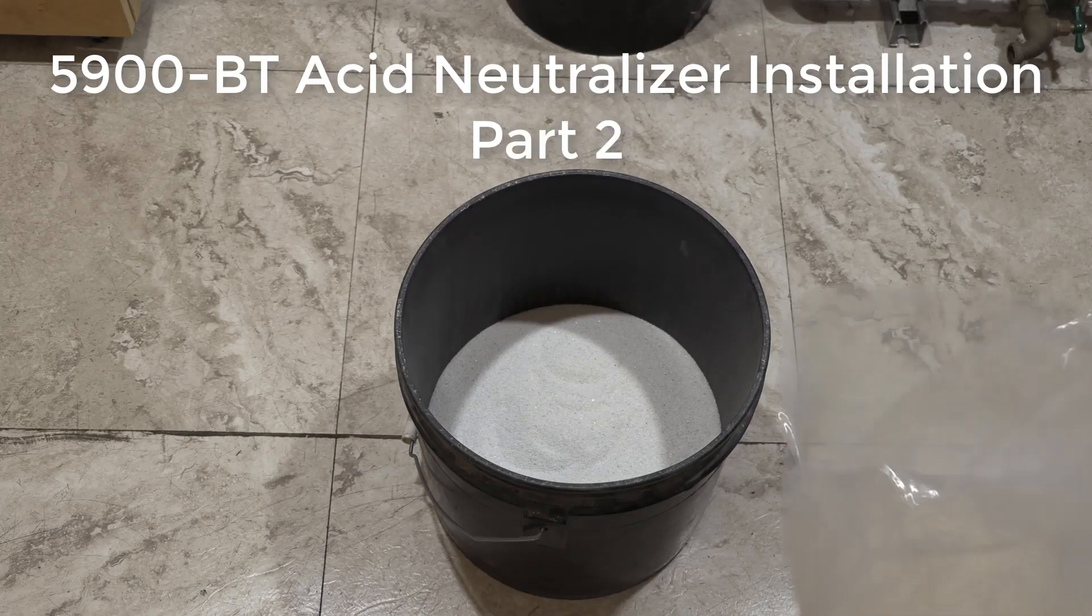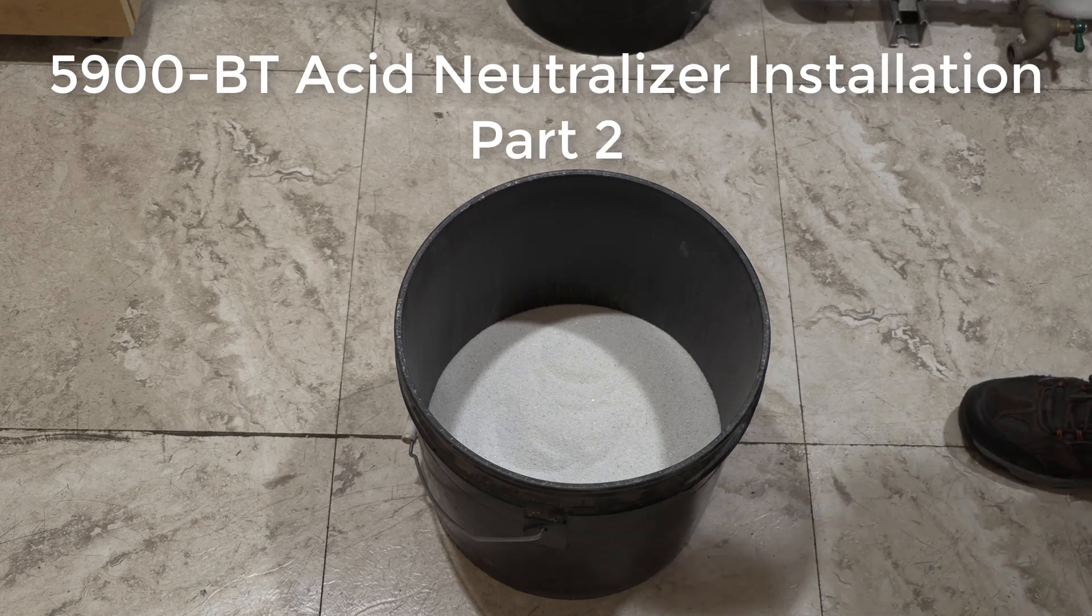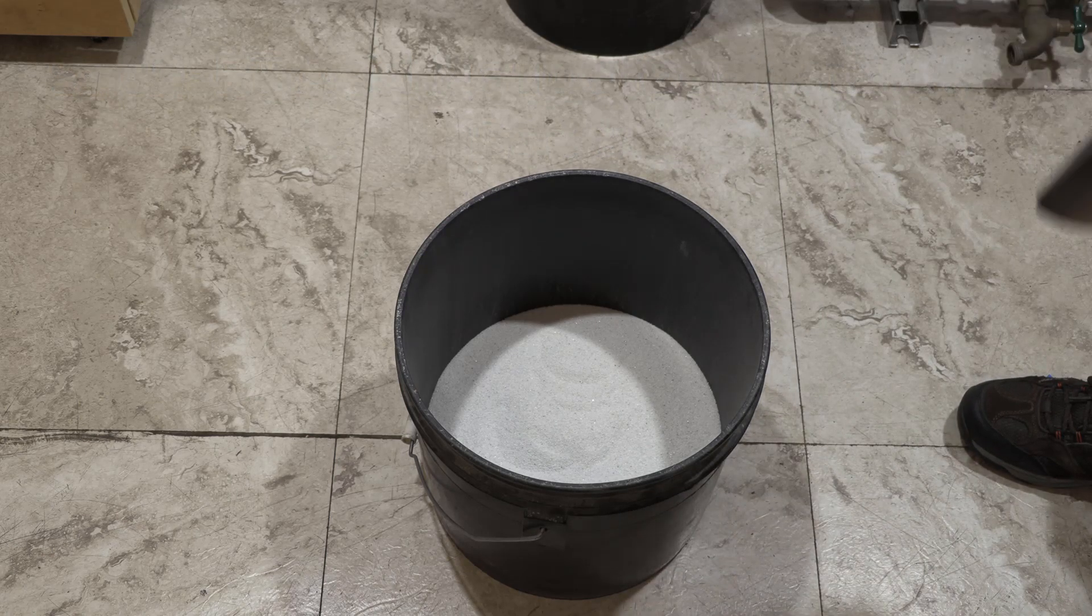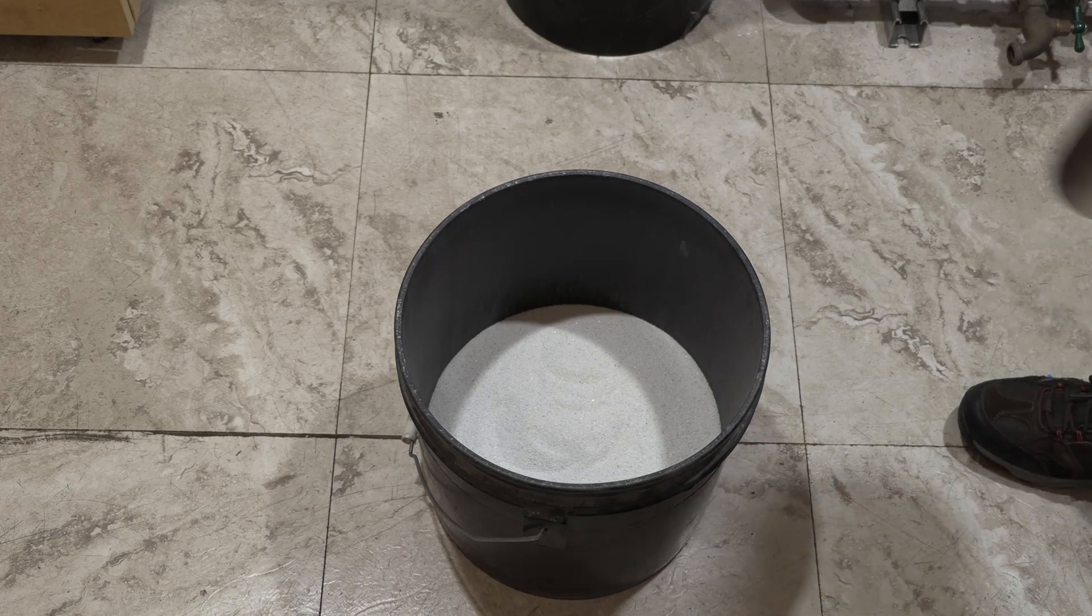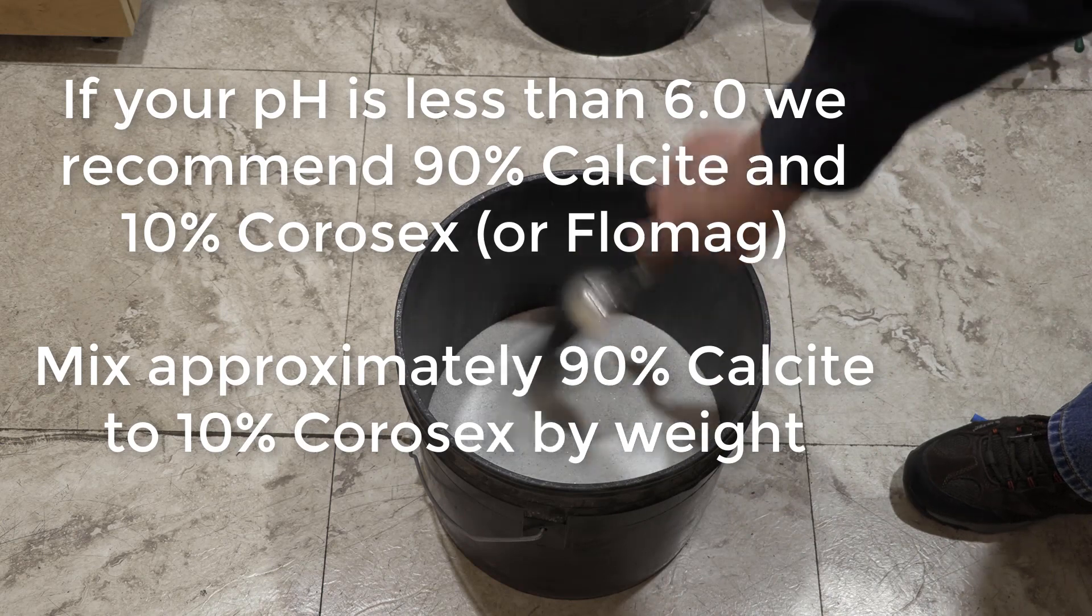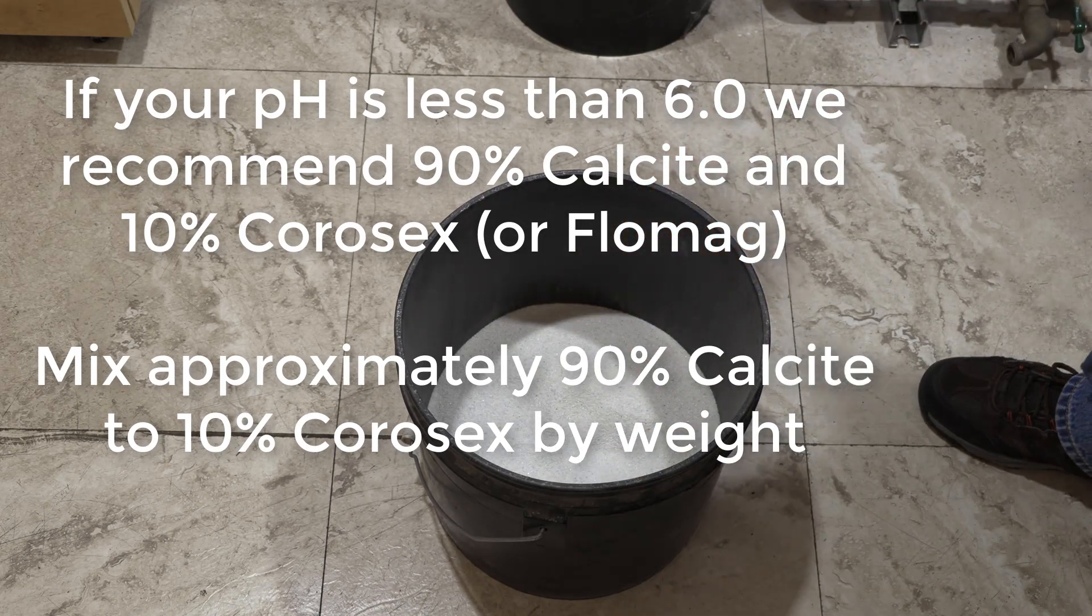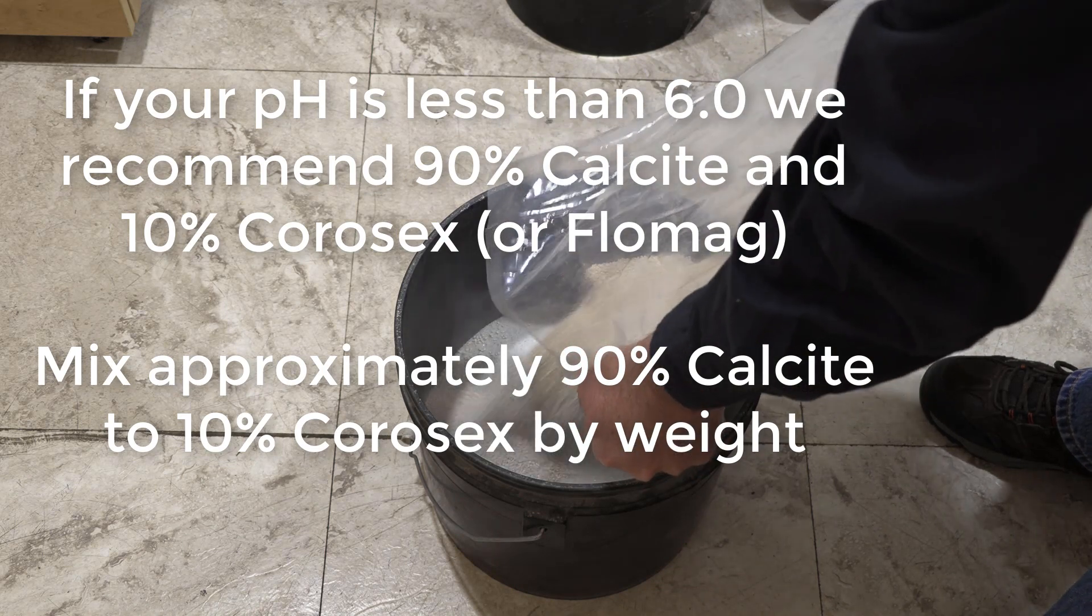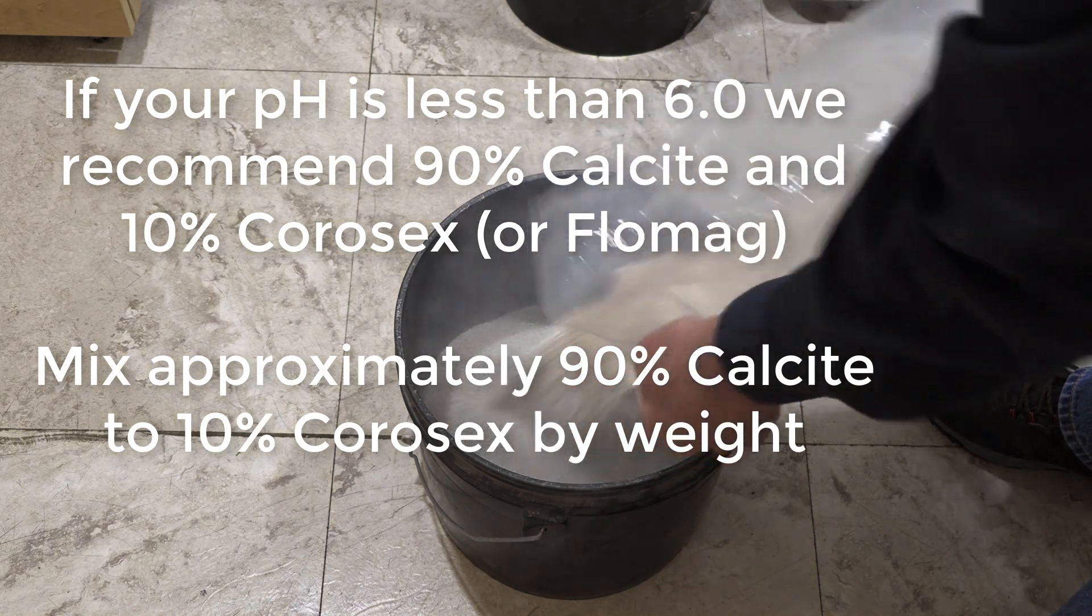Okay, so if you do have a lower pH of your water coming in and you do need the Corosex mixture, what you want to do is mix this at 90% to 10%. Basically, take and put some of your calcite in a bucket, and this is approximate, at approximately 10% of that.